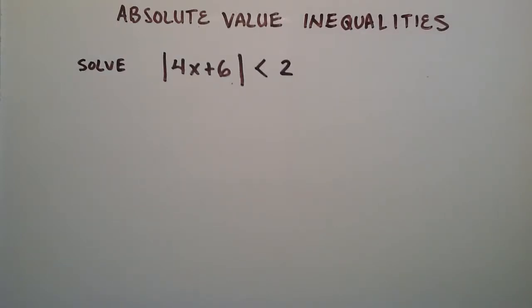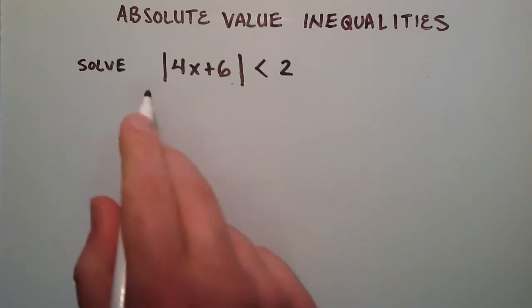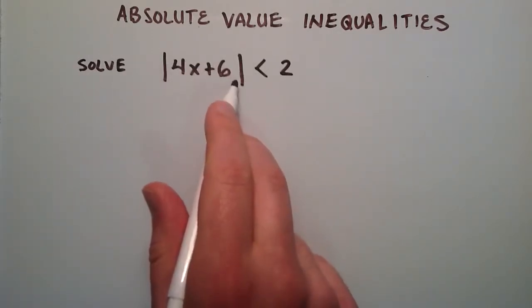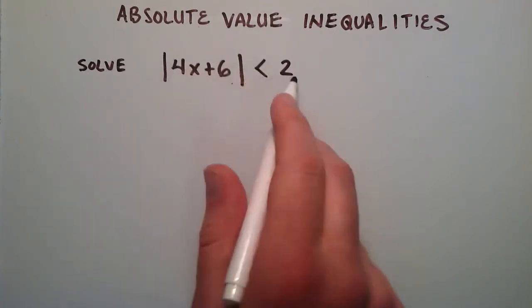Hey everybody, this is Paul. Welcome to Lesson 51 in the Intermediate Algebra Series. Here I'm going to do an example of solving an absolute value inequality. Basically, we have some expression, we're taking the absolute value of that expression, and that has to be less than the number 2.